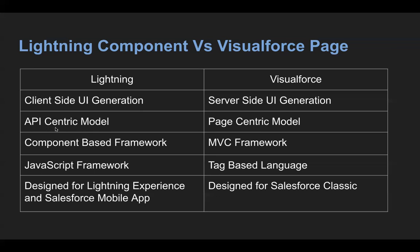Lightning is an API-centric model, whereas Visualforce is a page-centric model. Lightning supports a component-based framework, while Visualforce supports the MVC framework — Model, View, and Controller. In Lightning, JavaScript frameworks are supported, whereas Visualforce uses tag-based languages. Lightning is designed for Lightning experience and the Salesforce mobile app, and Lightning components can also be used in Salesforce Sites, also known as communities. Visualforce pages are specifically designed for Salesforce Classic, which is why Lightning components are now more popular.